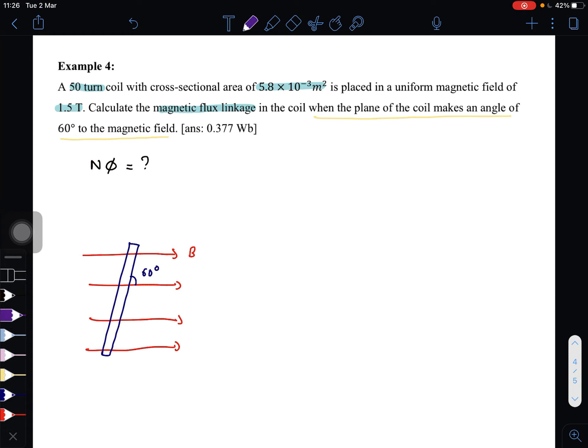So here is the area. The angle between the area and B will be 90° minus 60°, so we get 30°.